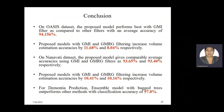In conclusion, on the OSS dataset, the proposed model performs best with the GMI filter at an average accuracy of 94.156%, and models with GMI and GMRG filtering increase volume estimation accuracy by 10.41% and 10.16% respectively. On the Nanavati dataset, the proposed model gives comparable average accuracies using GMI and GMRG filters at 93.65% and 93.40% respectively, with the same accuracy improvements of 10.41% and 10.16%. For dementia prediction, the ensemble model with bagged trees outperforms other methods with a classification accuracy of 97.8%.